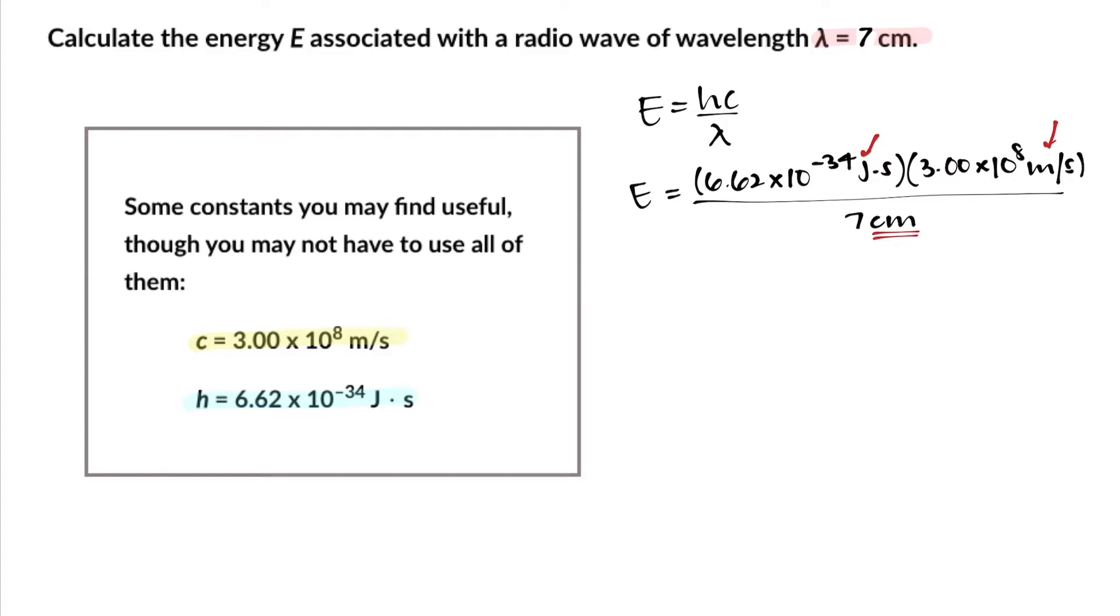So what we have to do is convert 7 centimeters into meters. One of the easiest ways to do this is to use the train tracks method of conversion. Using the train tracks method is really easy. You just draw a train track - one long line with a short line going in the middle. On the top left corner you write down the number you're working with, and on the top right corner you write down the unit you want to keep.